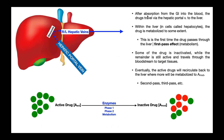After absorption from the GI into the blood, the drugs travel via the hepatic portal vein to the liver, where they're going to enter into sinusoids — vessels within the liver that have very large spaces in their walls, allowing things to leak out and some things to leak in. A drug coming through the hepatic portal vein can leak out and be taken up by certain cells of the liver called hepatocytes, within which the drug is going to be metabolized to some extent.